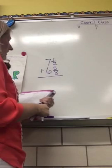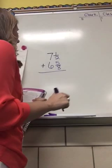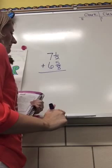The first thing we need to do when we're adding any fractions is make sure they have common denominators. If they do not have common denominators, we need to create them. So we need to find the lowest common multiple.